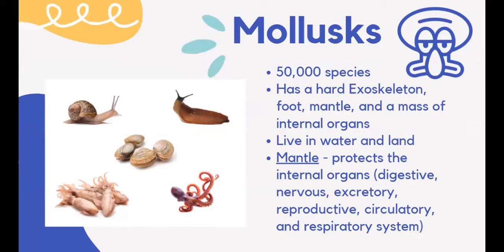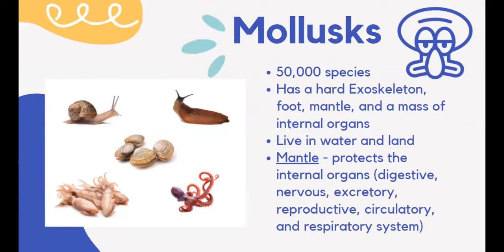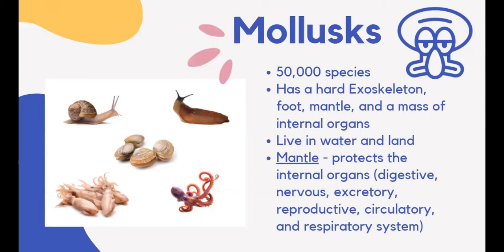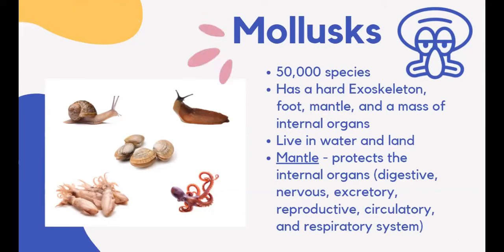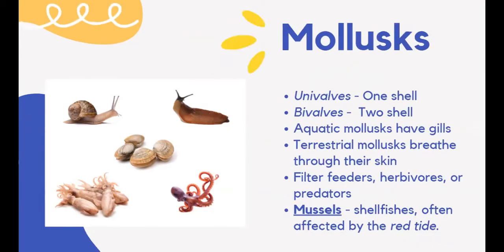Mollusks are one of the most diverse groups of animals with at least 50,000 species. They have soft bodies, a hard exoskeleton, a foot, a mantle, and a mass of internal organs. They live in water and on land — snails, slugs, clams, squids, and octopus are mollusks. Terrestrial mollusks like snails and slugs move slowly using their muscular foot. Some mollusks like oysters and clams are fixed-position creatures. The mantle protects internal organs including the digestive, nervous, excretory, reproductive, circulatory, and respiratory systems. Some mollusks are univalves with one shell, like snails; others, like clams, oysters, and scallops, are bivalves with two shells.